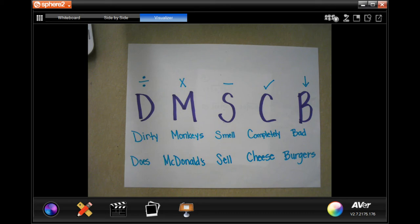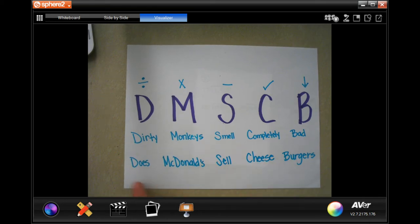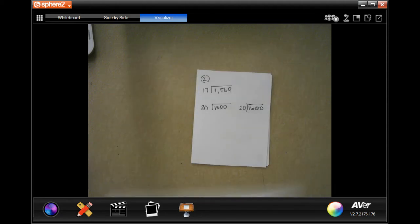Alright guys, welcome to Grade 5, Chapter 2, Lesson 5. We're going to be working on estimating with two-digit divisors. First, pause and write this down: Does McDonald's Sell Cheeseburgers Completely Bad? That's how we remember the letters for Divide, Multiply, Subtract, Check, and Bring Down. We're going to go through those steps.